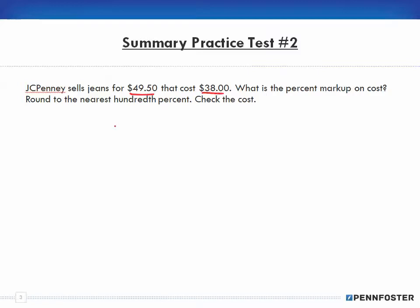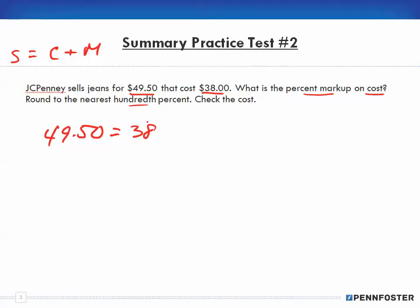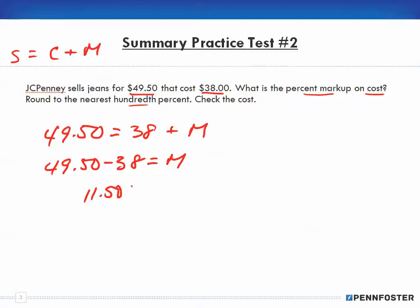They're selling for $49.50 and the cost is $38. It's asking: what is the percent markup on the cost, rounded to the nearest hundredth? Selling price equals cost plus markup. So $49.50 equals $38 plus M. Isolating the markup: $49.50 minus $38 equals M, so the markup is $11.50.